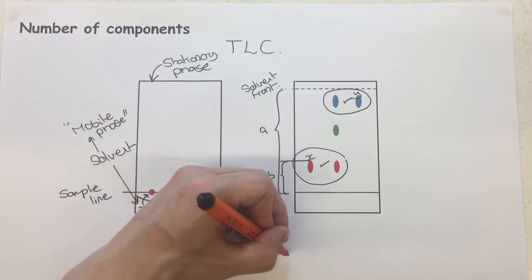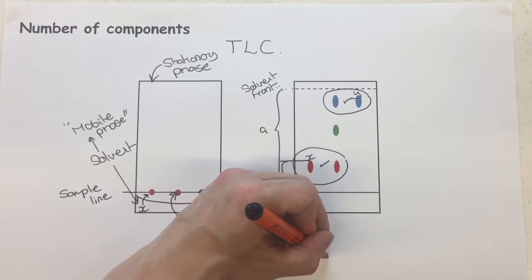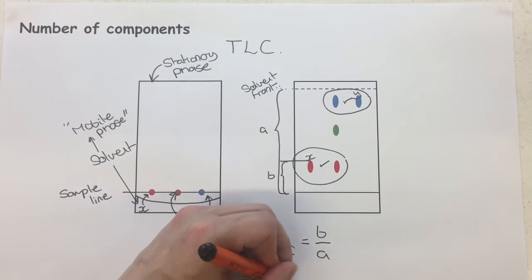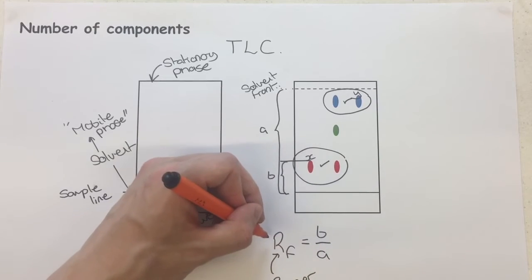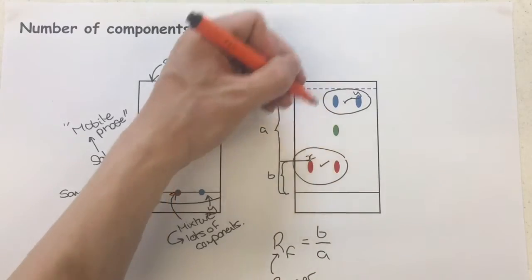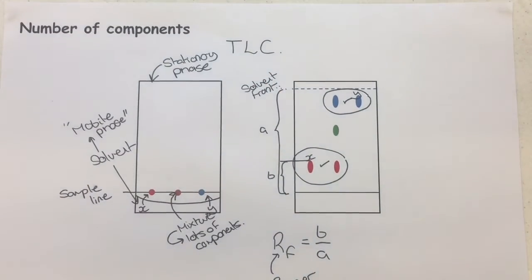To find out the retention factor, you simply do B divided by A. And the bigger this value gets, that corresponds to that it's travelled very far. So a bigger value would be seen for Y, and a smaller value would be seen for X. We compare those two together in terms of their RF values.